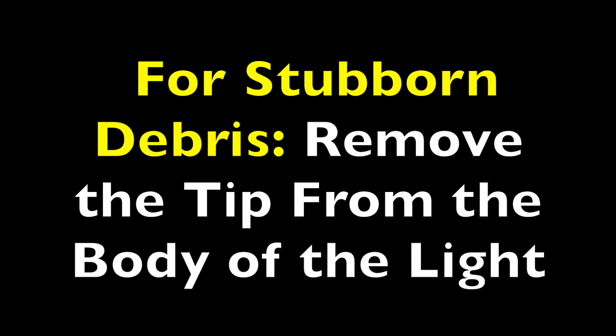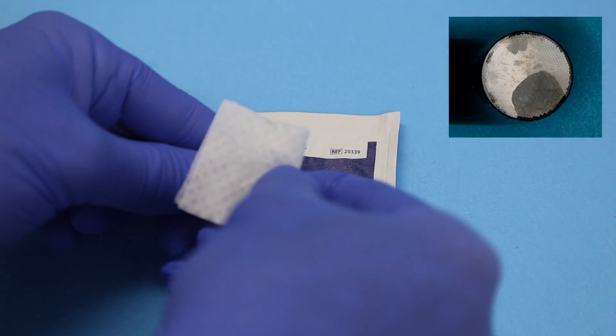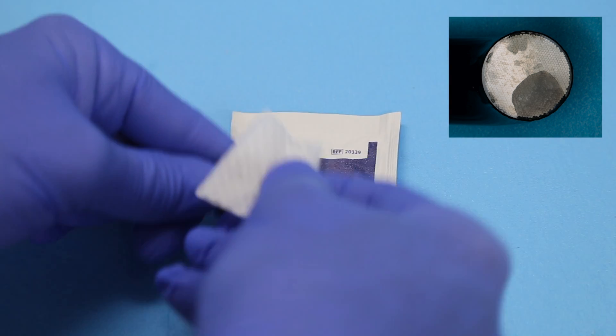For stubborn debris, remove the tip from the body of the light so that you can apply some pressure using an alcohol wipe and your fingernail. Rub vigorously and any debris will come off. Do not use a sharp metal instrument or anything that might scratch the surface of the light guide.